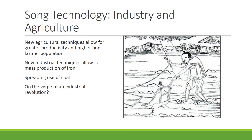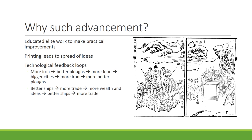However, that industrial revolution didn't happen. Why did such advancement occur in the first place? One big reason is that the people in charge were educated and valued ideas, helping develop practical solutions. Printing also helped spread ideas so others could copy successful methods. There were also technological feedback loops: producing more iron allowed more iron plows, which allowed peasants to grow more food, which allowed bigger cities, which allowed more iron production, enabling even better plows.